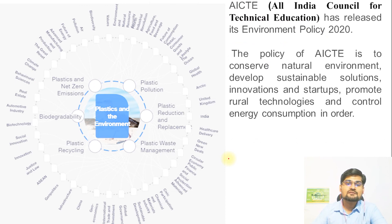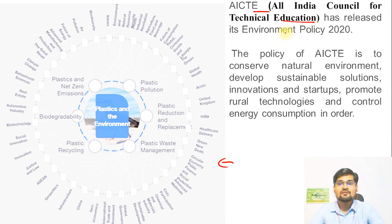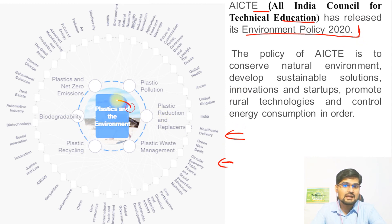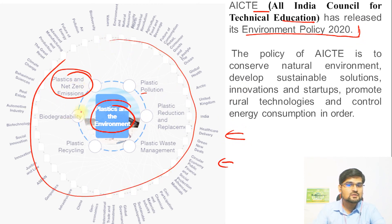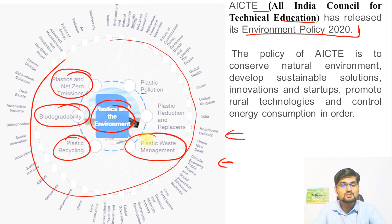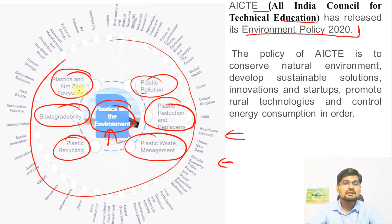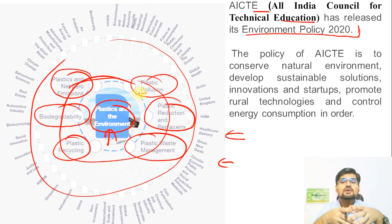An AICTE report on environmental policy 2020 illustrates an integrative management approach using plastics and environment as the theme. It covers associated aspects like net zero emissions, biodegradability, plastic recycling, plastic waste management, plastic pollution, and plastic reduction and replacement. When addressing any single environmental problem, we must understand its different facets and integrate them — that is what integrated environmental management means.